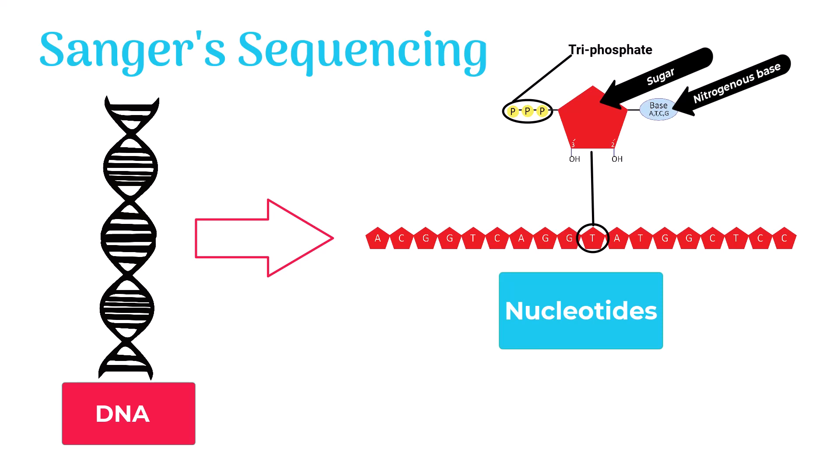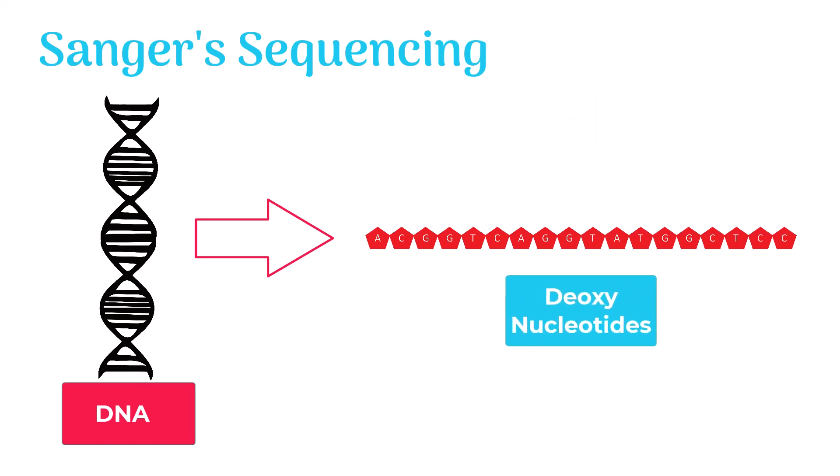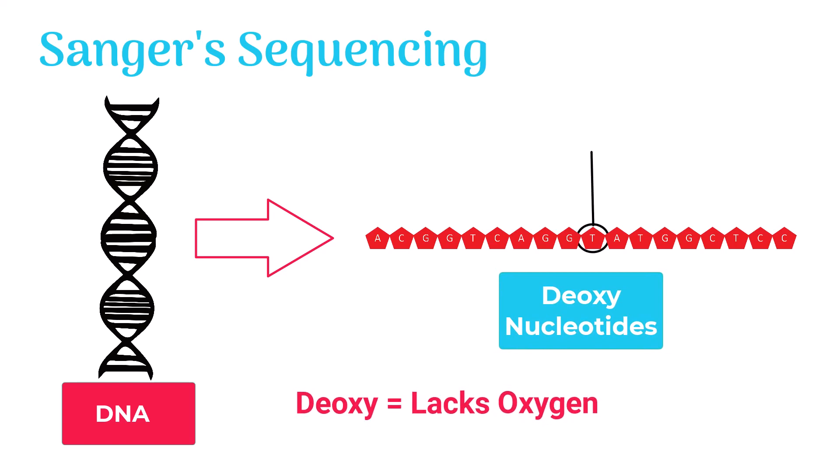But the nucleotides in DNA are deoxynucleotides. Deoxy means lacks oxygen. Deoxynucleotides lack oxygen at two prime carbon. Instead of an OH group at their two prime carbon, they only have hydrogen at their two prime carbon.